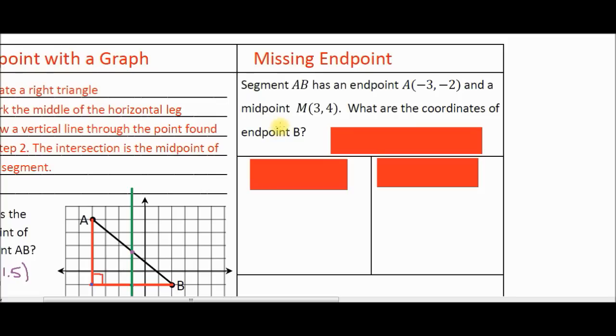In all of our previous problems, we were given the endpoints A and B or C and D or whatever the letters were for those endpoints. You were asked to use the midpoint formula to find the midpoint of that segment. In this case, we're given one endpoint and we're given the midpoint, and they're asking us to find the coordinate of the other endpoint.